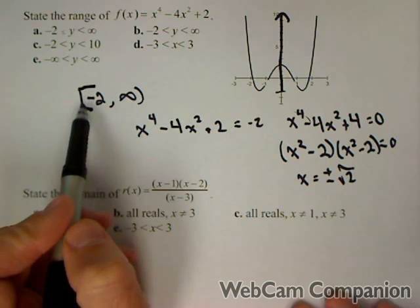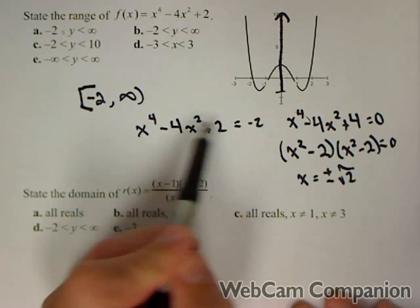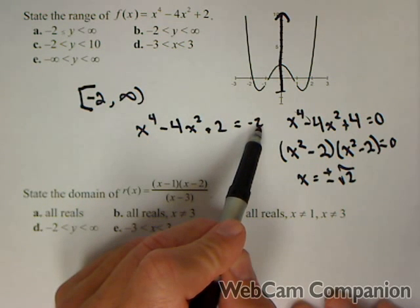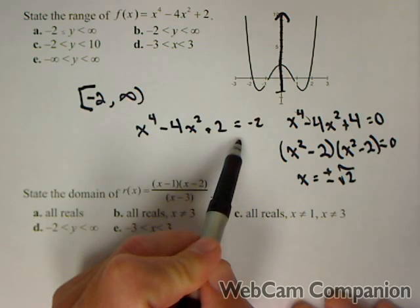The only question was whether or not we wanted to include negative two. All we gotta do is see if there's an input that gives negative two as an output. This is how we do it algebraically.